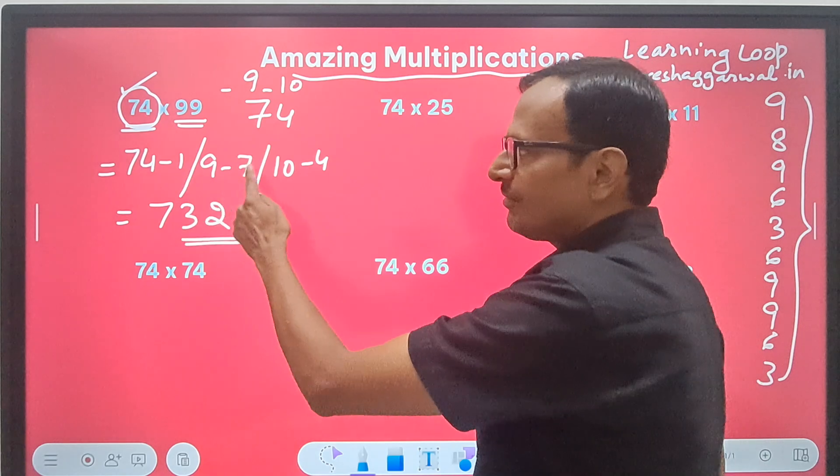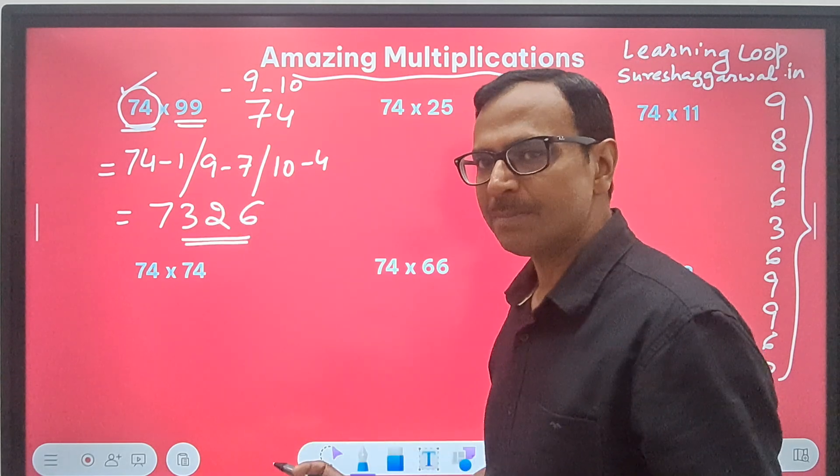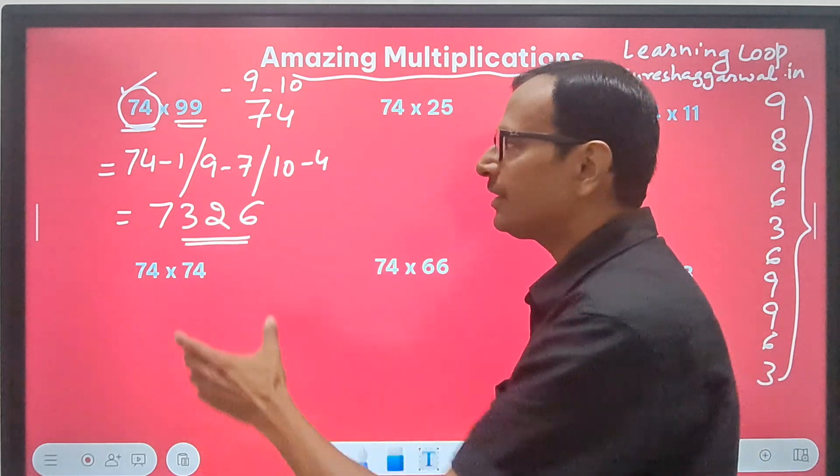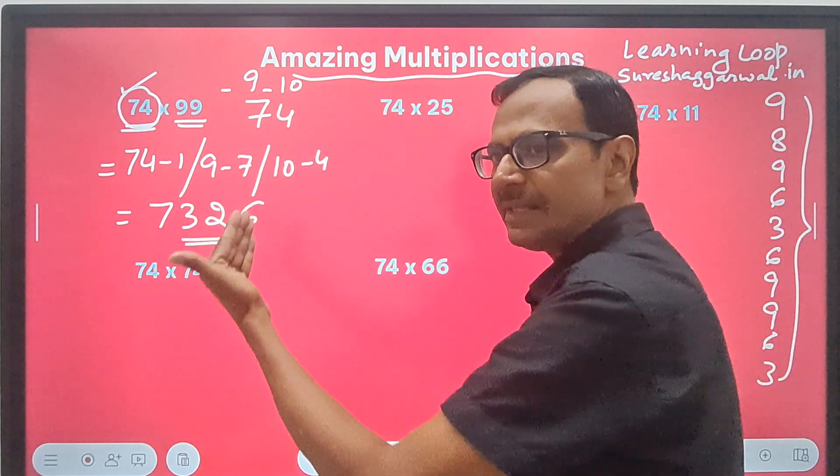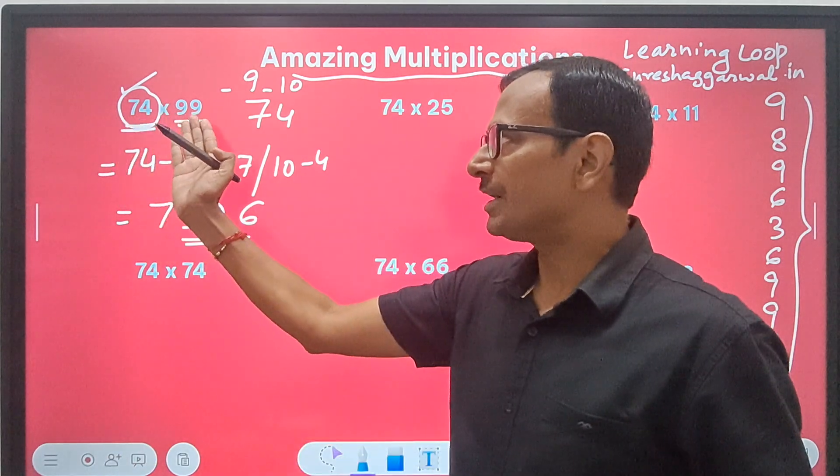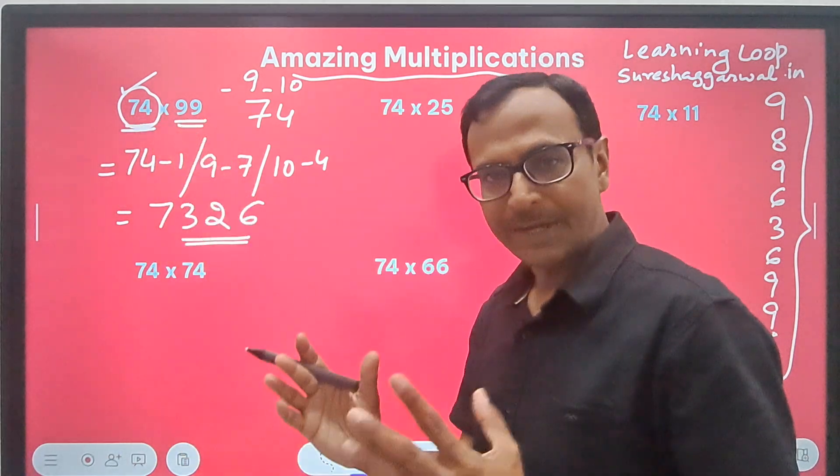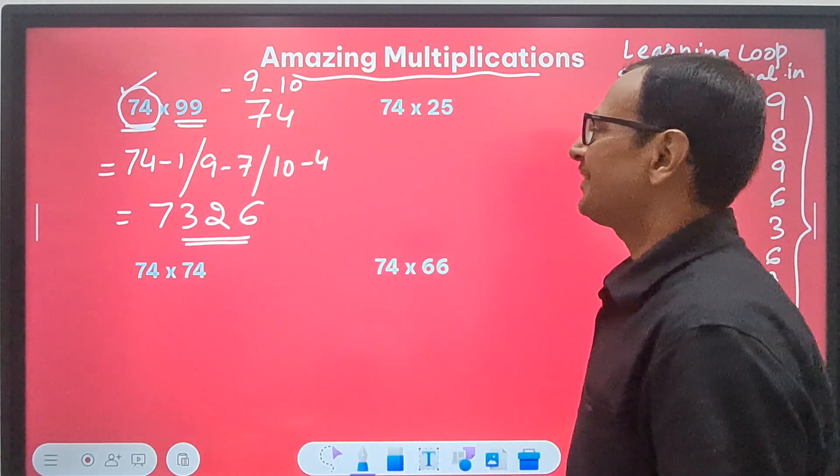74 times 99 is 7326. This step which I have written here is a mental math step. You don't need to bother about writing it. You can actually see the number and tell the answer. Even if there are 10 digits here and you are multiplying it by 10 nines, you will get the correct answer.